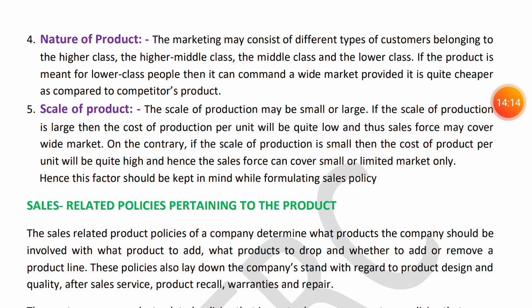Next is the Nature of Product. The market consists of different types of customers: higher class, higher middle class, middle class, and lower class. Based on which class your product targets, you form your sales policy. If your product targets the upper class, they are price insensitive and focus more on quality. So your sales policy should focus more on product quality and branding rather than discounts or price reduction. The middle class is price conscious; they want refunds if the product is not satisfactory, and they want warranty and guarantee. So for middle-class targeting, you can offer discounts, extended warranty, and guarantee with the product.